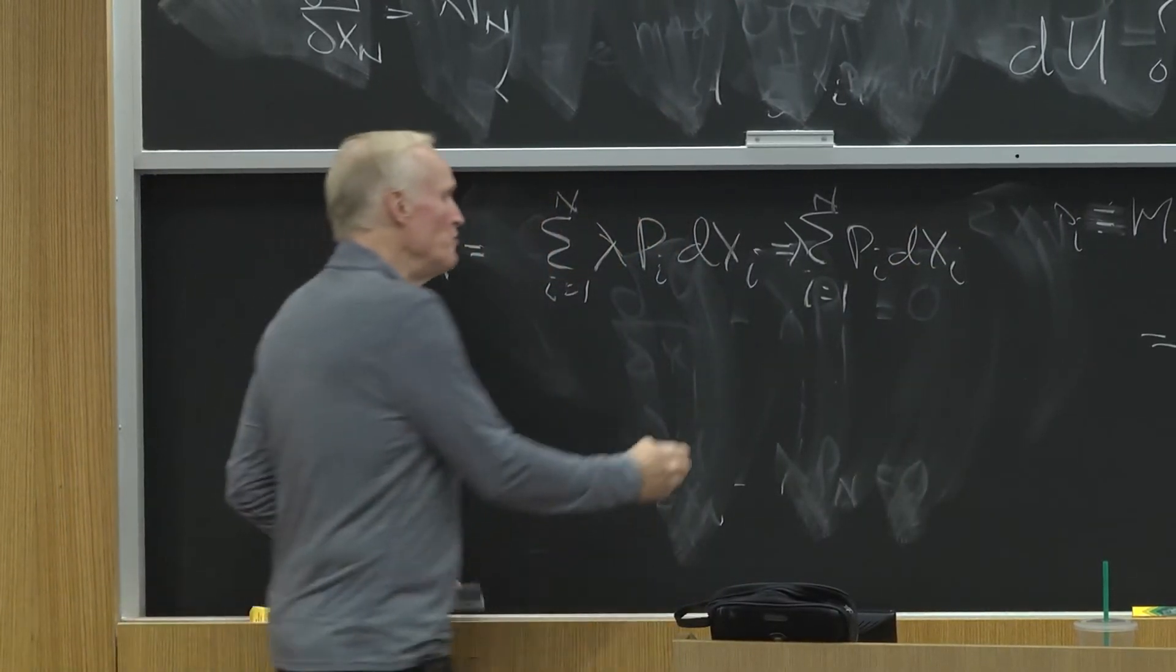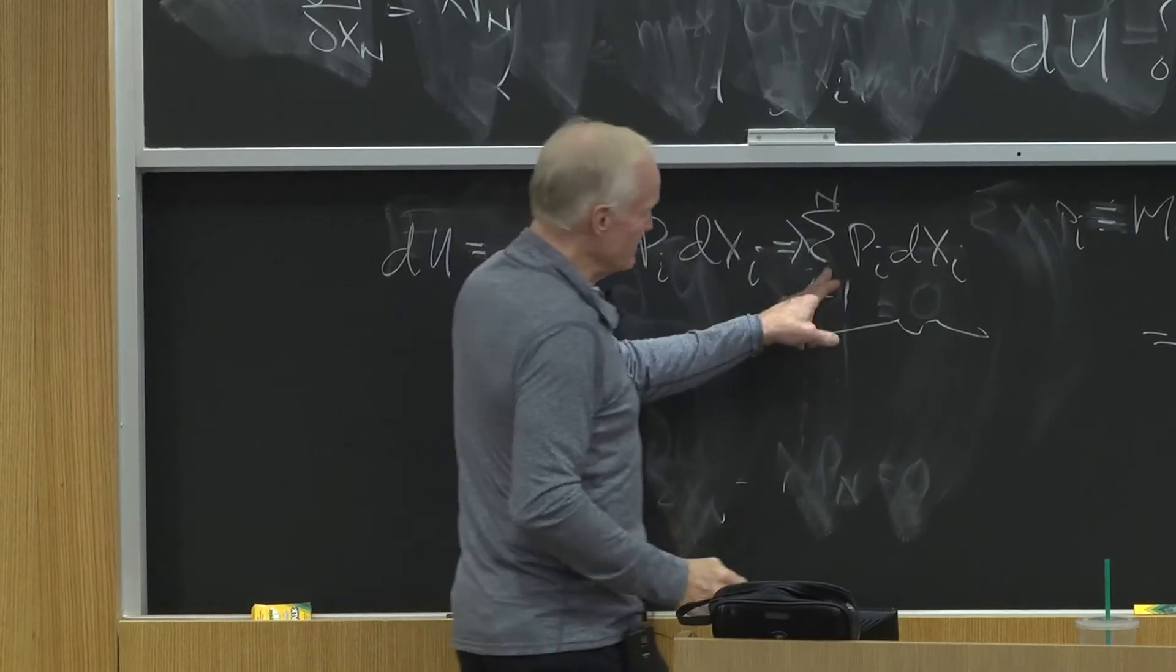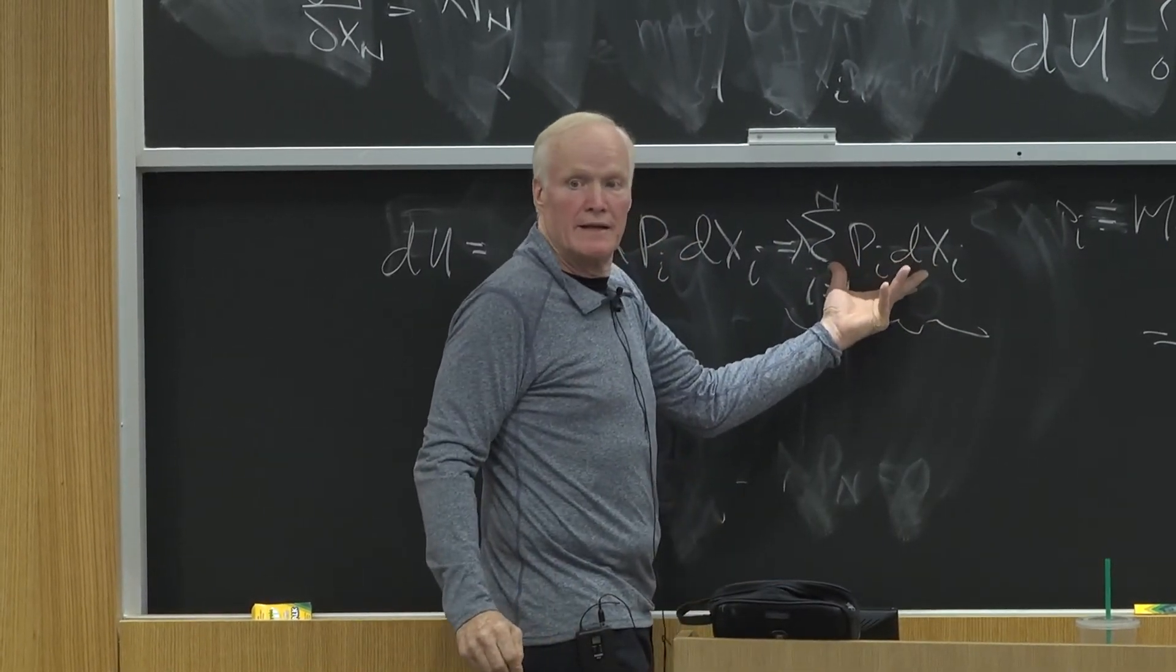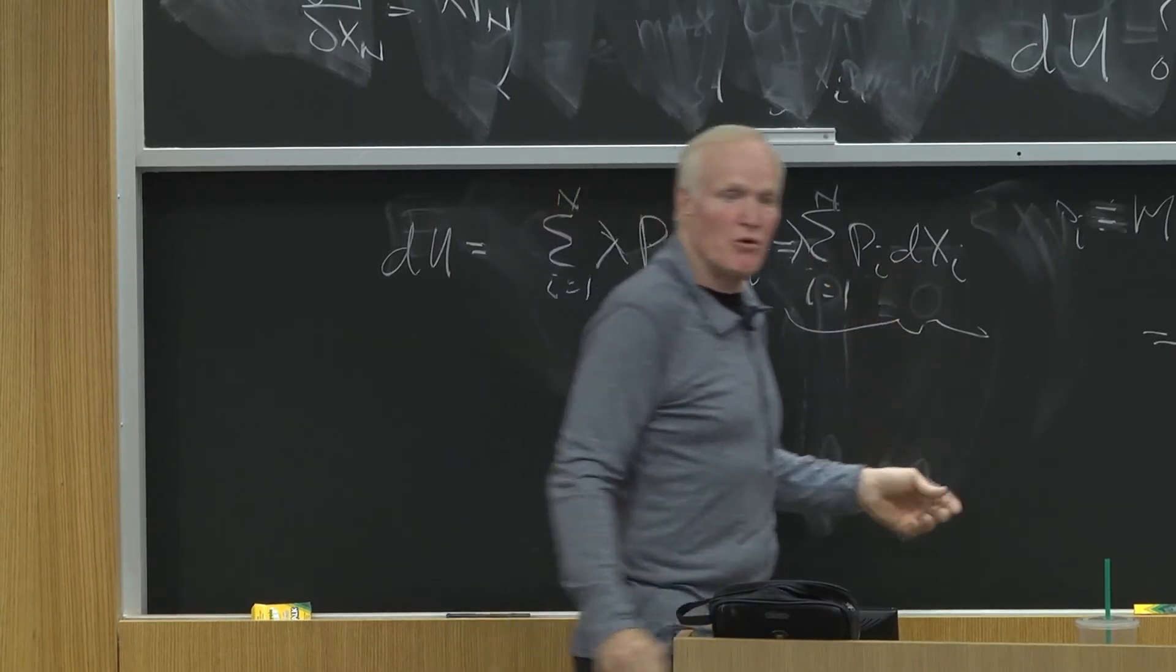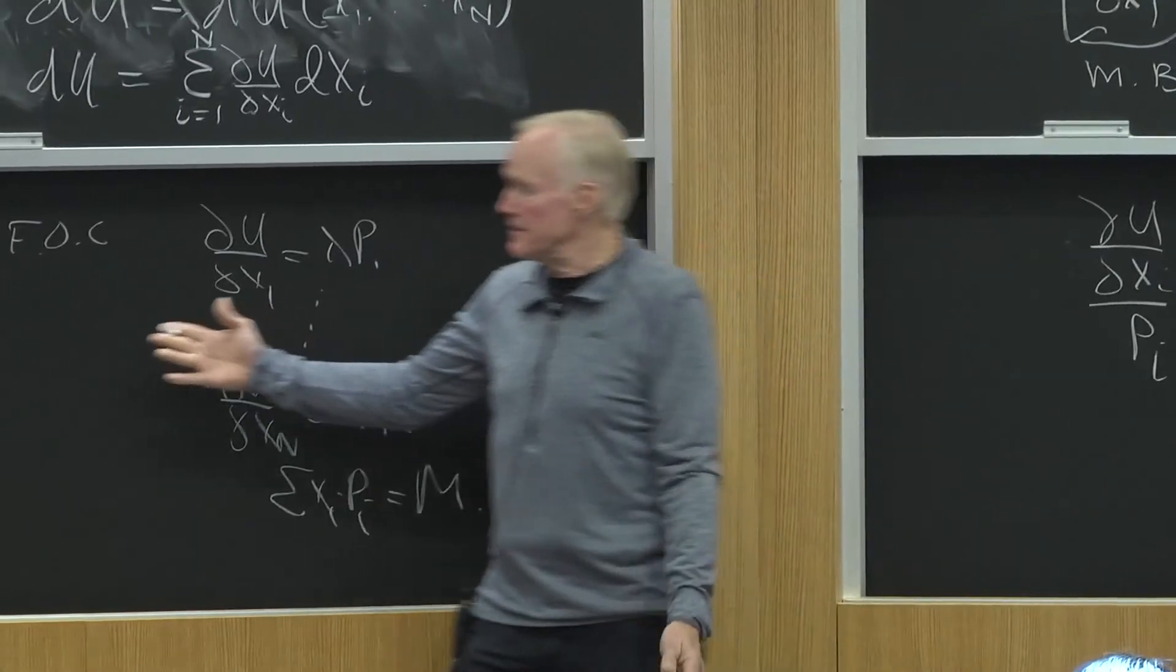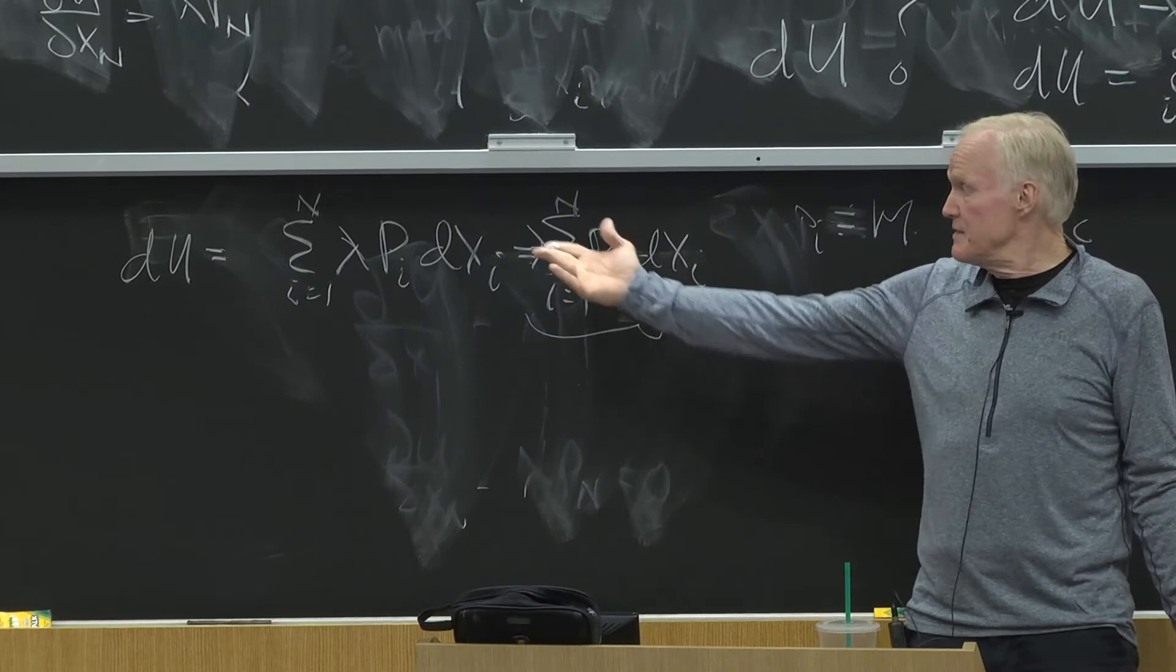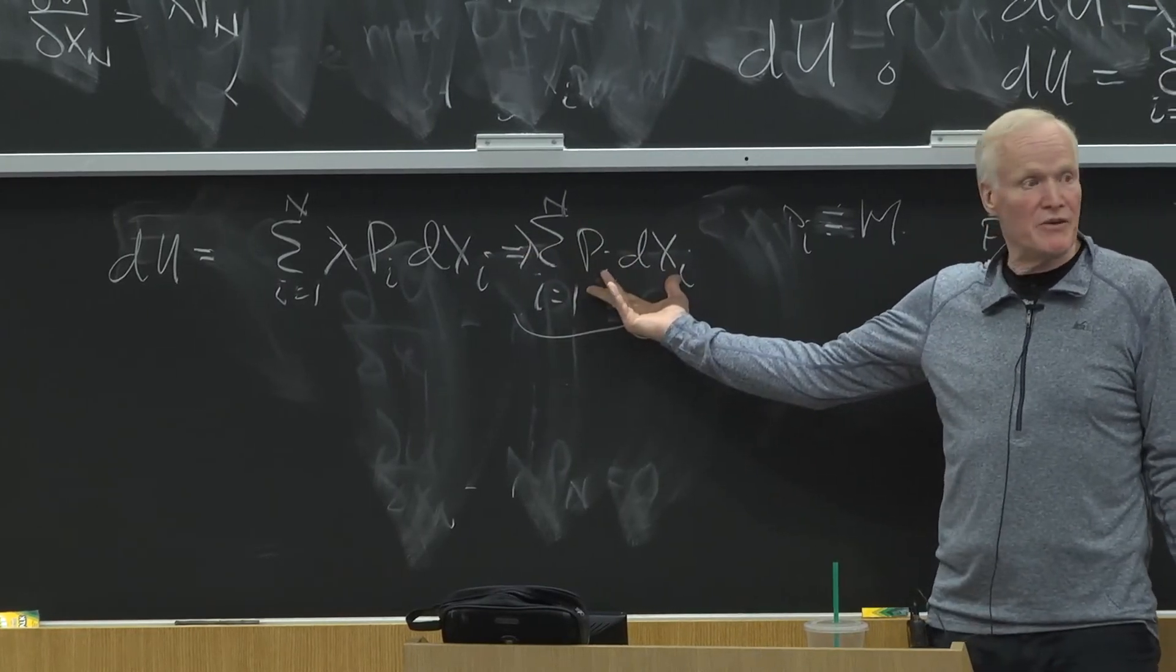And the key notion is that the sum of pi dxi is an observable quantity. It's an observable quantity. It's something I can measure. I know the prices. I know the changes in consumption. I can ask, is he better or worse off? Just by looking at this equation.